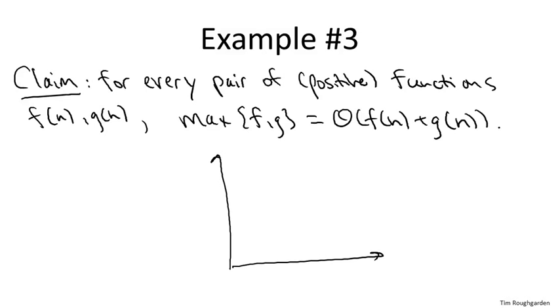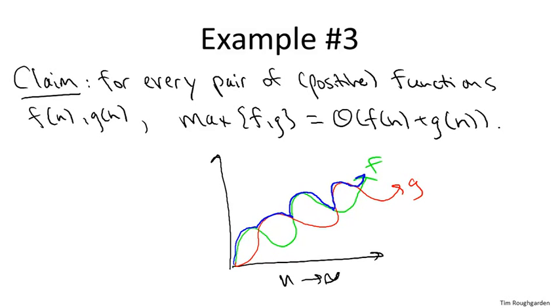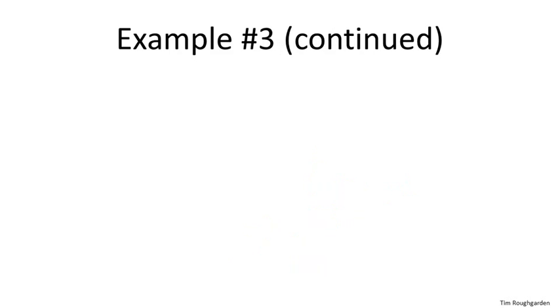maybe we have f being this green function here, and we have g equal to this red function, then by the point-wise maximum, max f g, I just mean the upper envelope of these two functions. So that's going to be this blue function. So let's now turn to the proof of this claim, that the point-wise maximum of two functions is theta of the sum of the two functions.